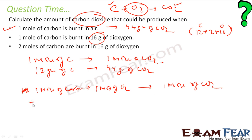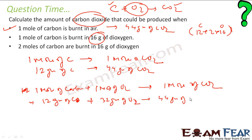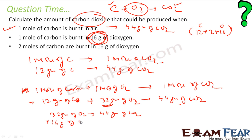From the balanced equation: 12 grams of carbon needs 32 grams of oxygen to give 44 grams of CO₂. But we only have 16 grams of O₂, not 32 grams, so oxygen acts as the limiting reagent. Since 32 grams of oxygen gives 44 grams of CO₂, then 16 grams of oxygen will give 44/32 × 16 = 22 grams of CO₂.